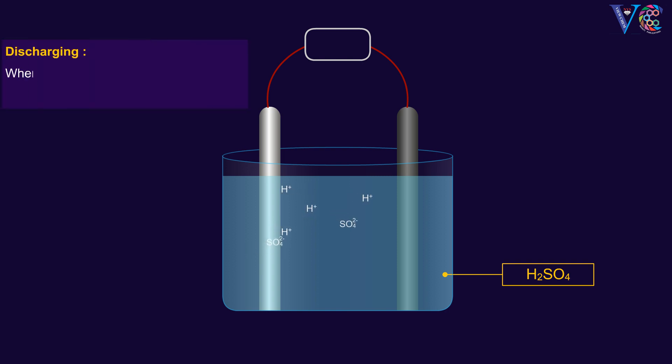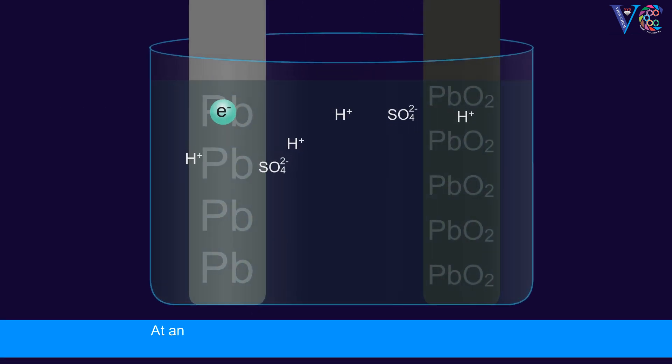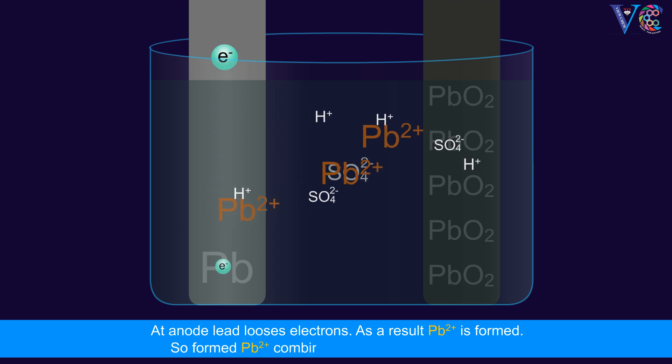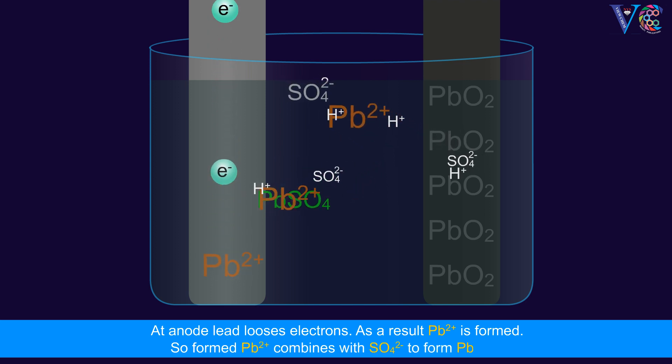Discharging: When the lead acid cell supplies energy, the cell discharges. At anode, lead loses electrons. As a result, Pb2+ is formed. The formed Pb2+ combines with sulfate ions to form lead sulfate.